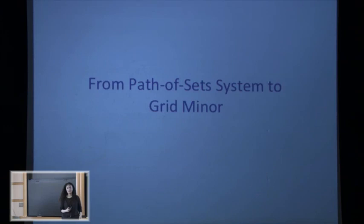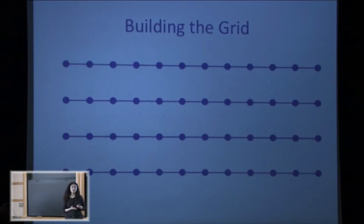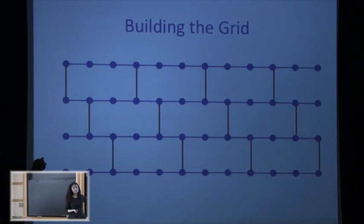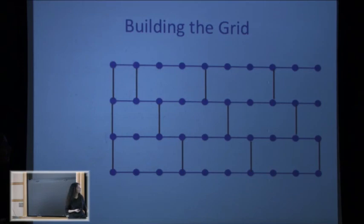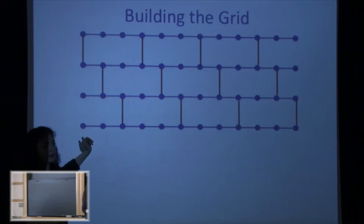I'm going to show the main ideas of going from a path-of-set system to a grid. Intuition: to build a grid we need horizontal paths (rows) and columns. I'll relax the notion of a column — a column for my purposes is any path-like object connecting the rows, and since I'm allowed to contract edges, as long as I can show this is a minor of my graph I'll be fine. So I'm going to find a subdivision of this graph, where each edge is actually a path inside my graph.